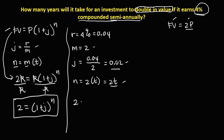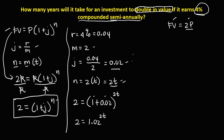Substituting these values into the formula, we have 2 equals 1 plus J, where J is 0.02, to the power N, and N is 2 times the time. Simplifying: 2 equals 1.02 to the power of 2 times the time.